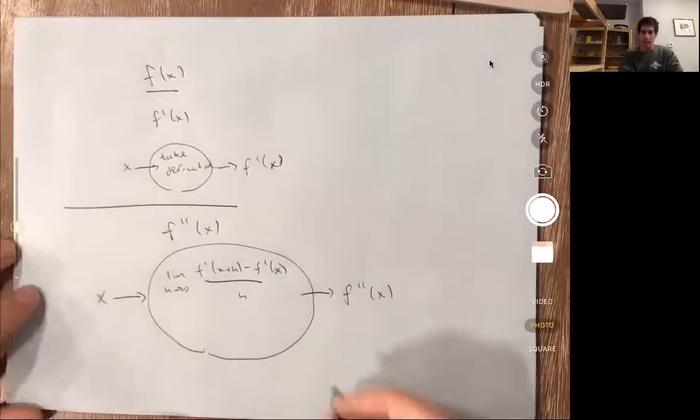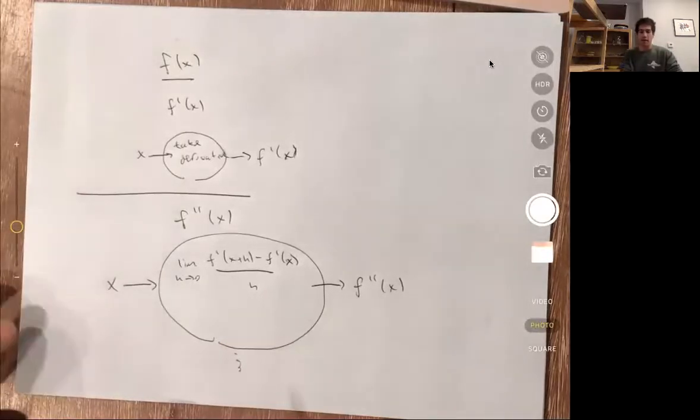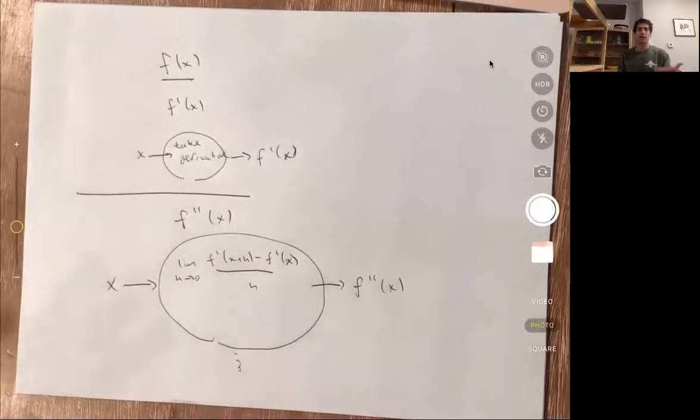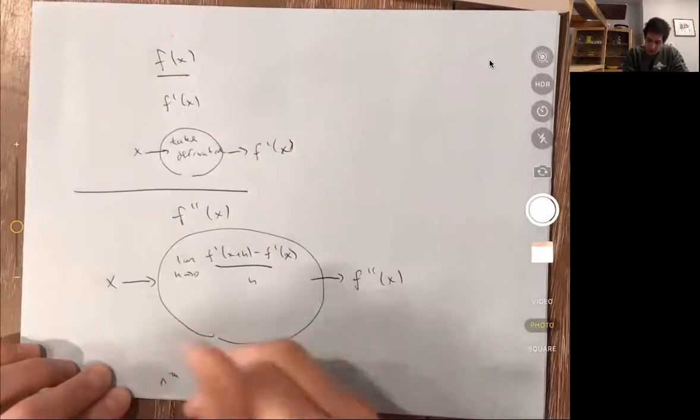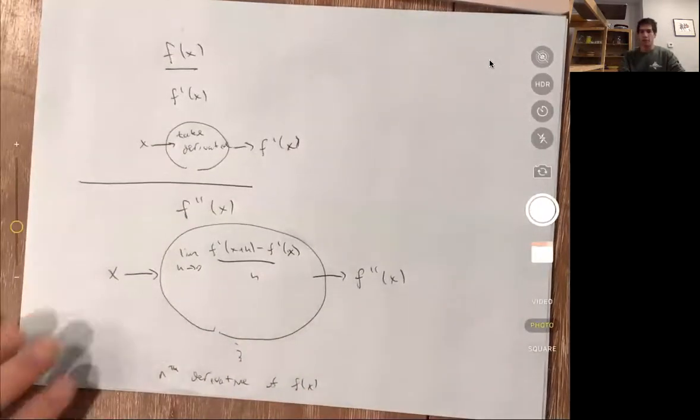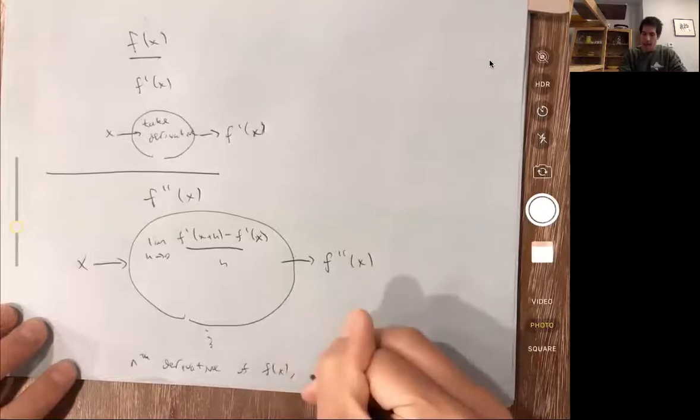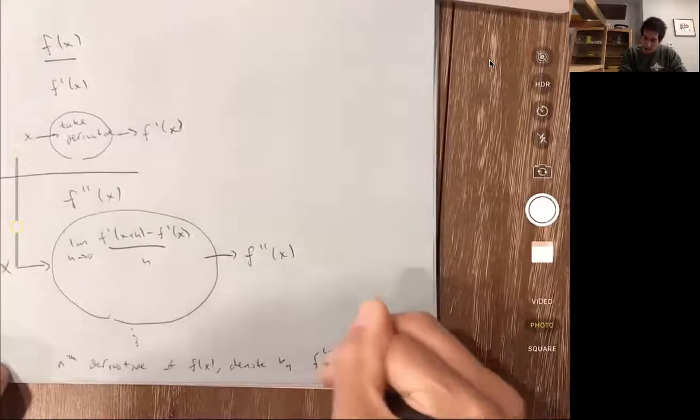The last thing I'll note is that we could keep doing this. I could take the derivative of f double prime. So now this is a function itself. And I can ask about its domain, its range, its continuity, its limits. And I could ask about its derivative. If I took the derivative of f double prime, we would call this the third derivative. In general, I can take as many derivatives as I want. And if I take n derivatives, we call this the nth derivative, the nth derivative of f. So if I were to take the derivative n times, I call it the nth derivative of f of x. And I'll denote this by f and then n of x, f to the n of x.